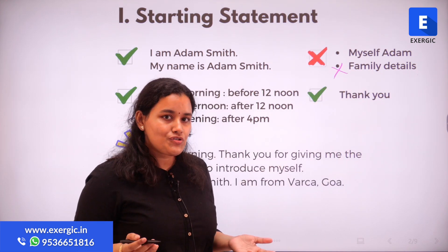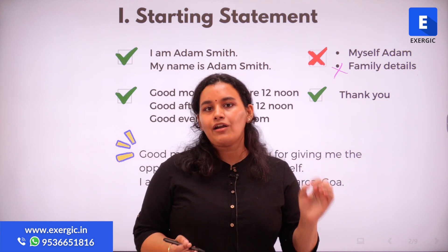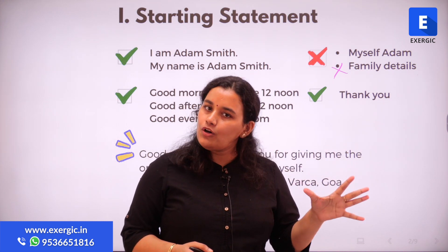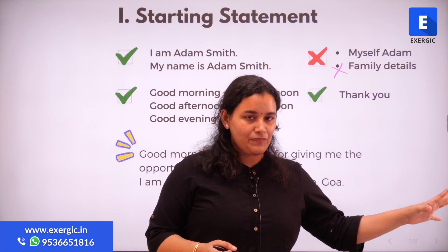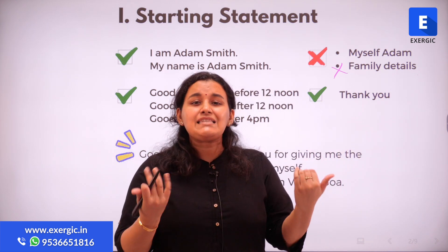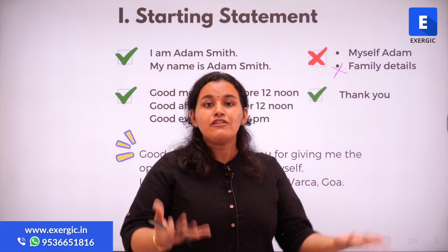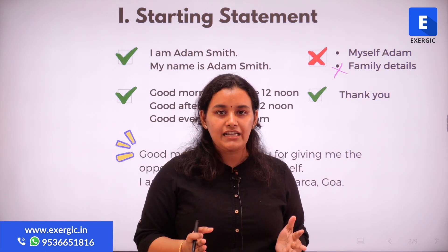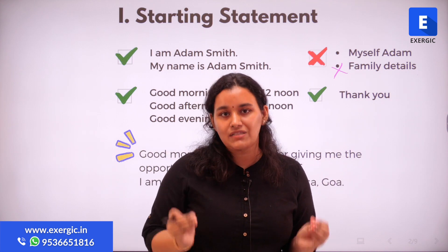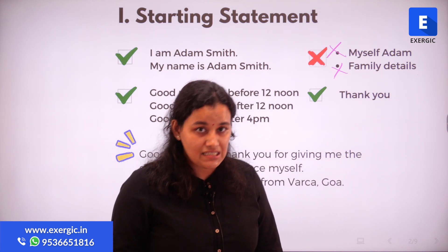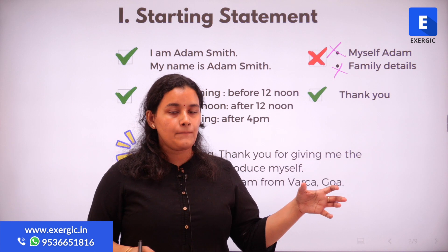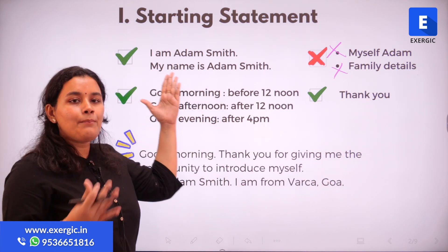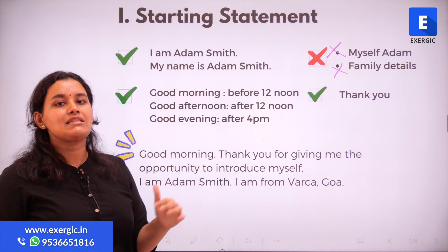What are you supposed to say instead? Just your name — at most the place you are from: 'I am Rahul, I am from Chennai.' Remember, 'myself Rahul' or 'myself Pooja' is incorrect English — that is not the correct way to say it. What you should say instead is 'I am' or 'my name is' — so 'I am Adam Smith' or 'my name is Adam Smith.'